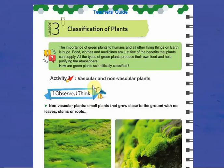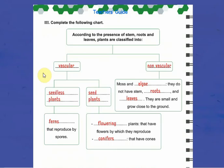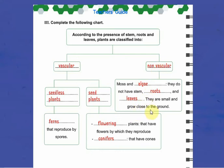Now let's go to the second lesson which is classification of plants. As we said, we can classify plants according to the presence of stem, roots, and leaves into vascular and non-vascular plants. Vascular plants have a root system and leaves; they can be classified into seedless plants like ferns and seed plants like flowering plants and conifers. Non-vascular plants grow close to the ground and don't have stem, roots, and leaves — like moss and algae.